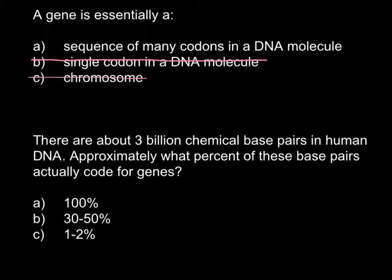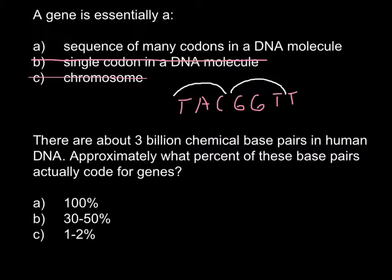For example, if I take a random sequence like TACGGTT, one codon would be a trinucleotide. Each trinucleotide would be later transcribed into messenger RNA, and messenger RNA would be translated — each codon on the messenger RNA would be translated into one amino acid. So the correct answer is A: a gene is a sequence of many codons in a DNA molecule.